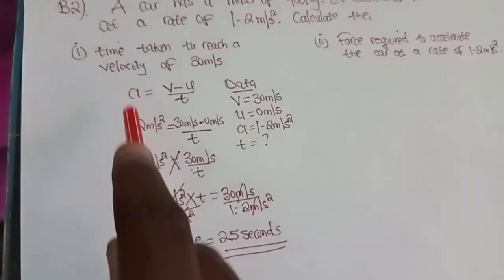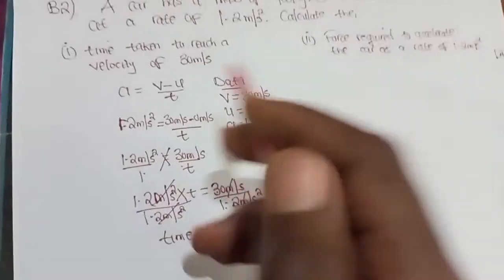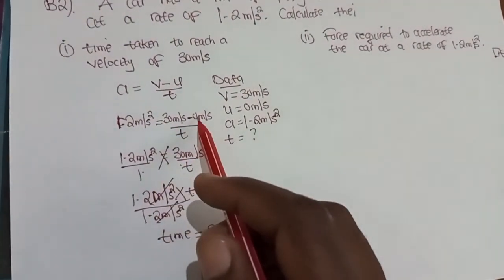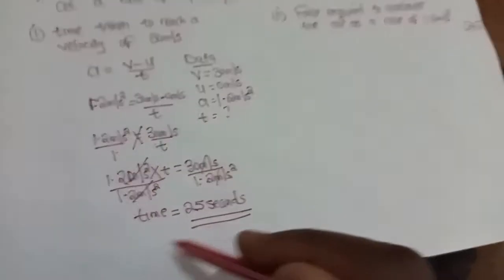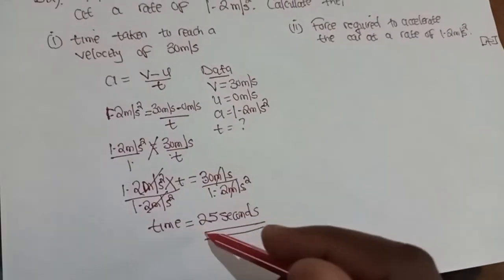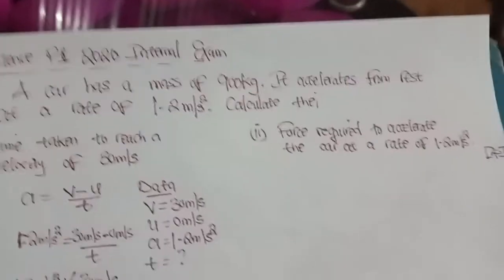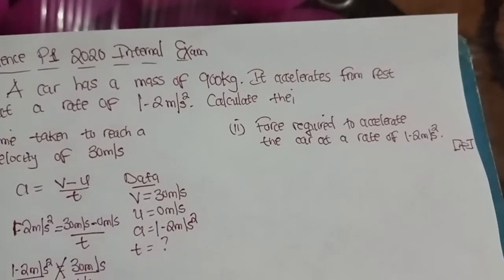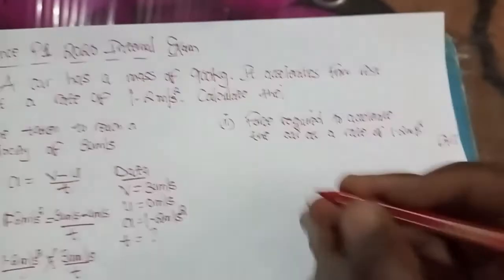What was most important was to use the formula: acceleration equals final velocity minus initial velocity over time taken. The acceleration was given as 1.2 m per second squared, the final velocity was 30, the initial was at rest — so 0 — but the time was never given, and we solved to get 25 seconds. Now let's go to part 2: the force required to accelerate the car at a rate of 1.2 m per second squared.